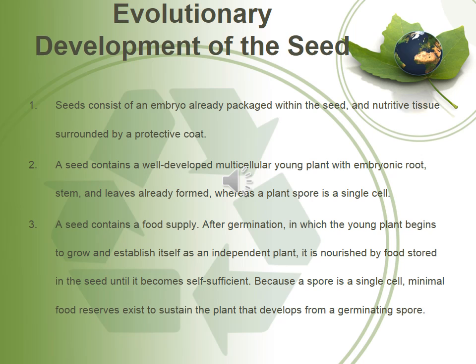Evolutionary Development of the Seed. Seeds consist of an embryo already packed within a seed and nutritious tissue surrounded by a protective coat. A seed contains a well-developed multicellular young plant with embryonic root, stem, and leaves already formed, whereas a plant spore is a single cell. After germination, in which the young plant begins to grow and establish itself as an independent plant, it is nourished by food stored in the seed until it becomes self-sufficient.